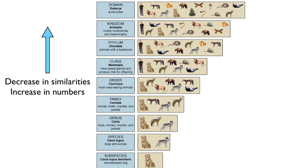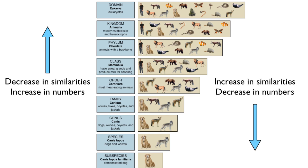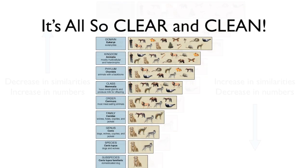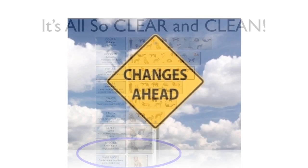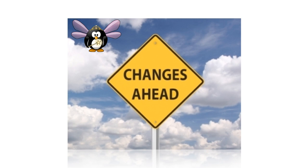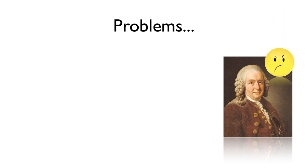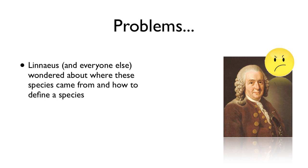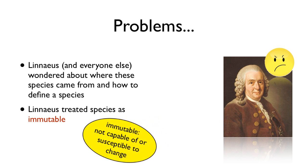What you should notice is that as you go up the hierarchy, you have a decrease in the number of traits individuals have in common, but more individuals in each group. As you go down, you have fewer relatives in each category but more in common with them. And although this looks very clean and organized, taxonomists argue constantly about groupings — and the most confusing level of all is the species level. Even Linnaeus and his peers discussed where species came from and how to properly define them. Linnaeus treated species as immutable — not capable of change — a view that came largely from the Bible and the story of Noah's Ark.